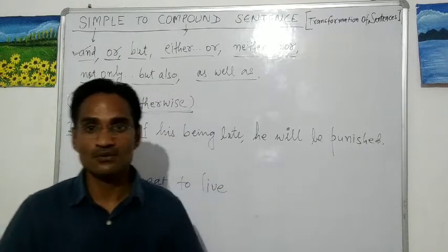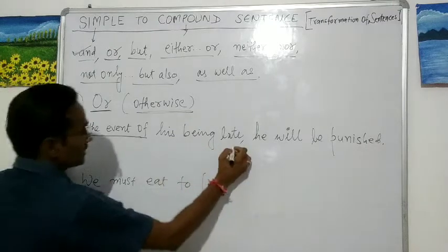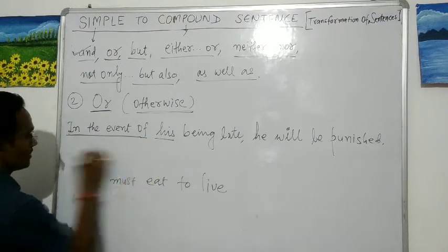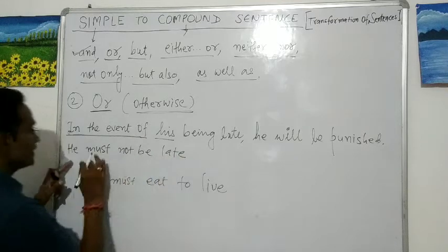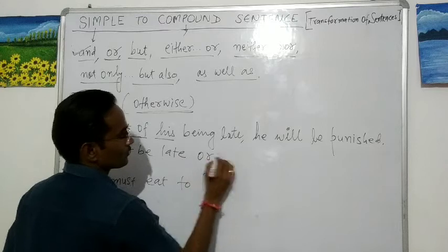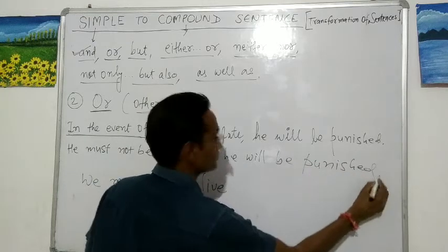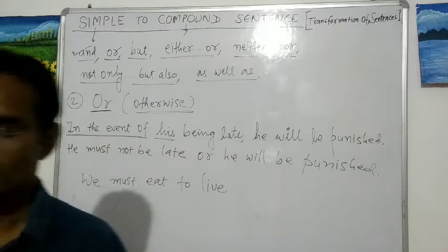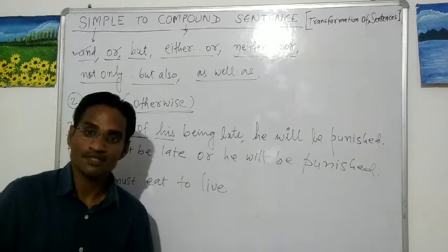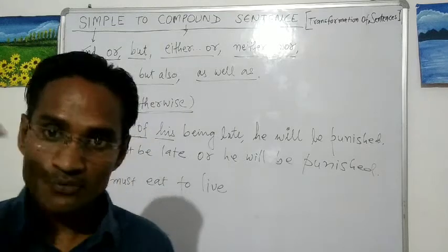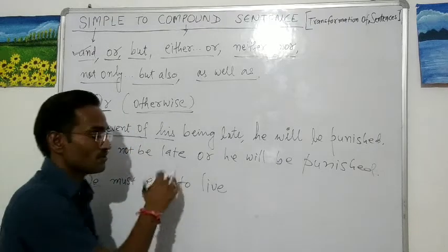So: 'In the event of his being late, he will be punished' becomes 'He must not be late or he will be punished.' If he doesn't want to be punished, he must not be late — or he will be punished. These two independent clauses are joined by 'or.'